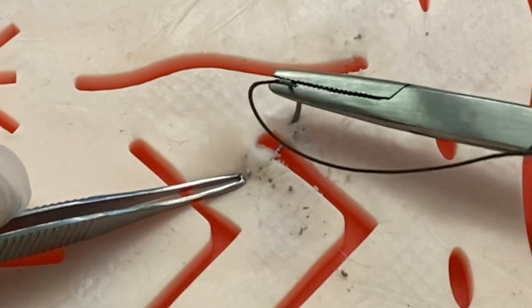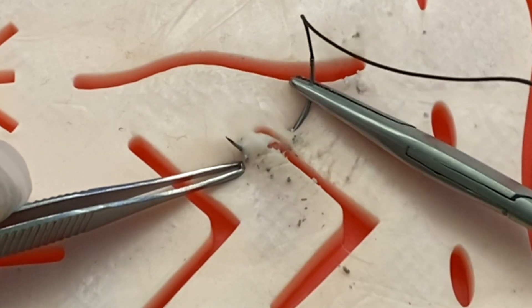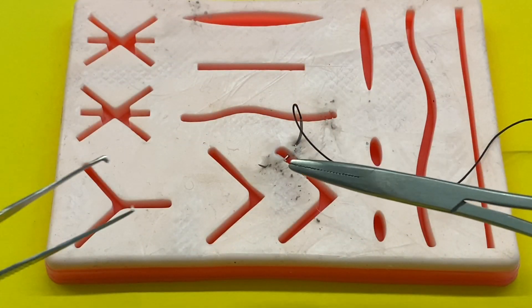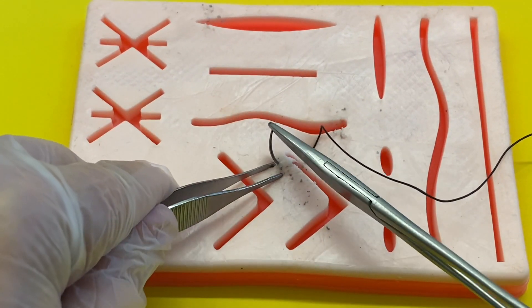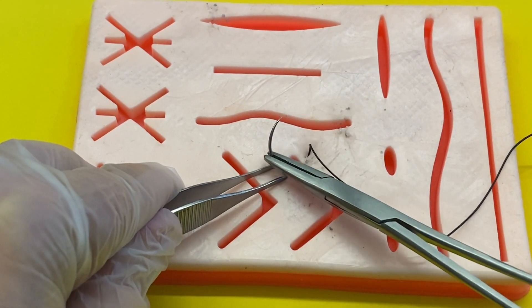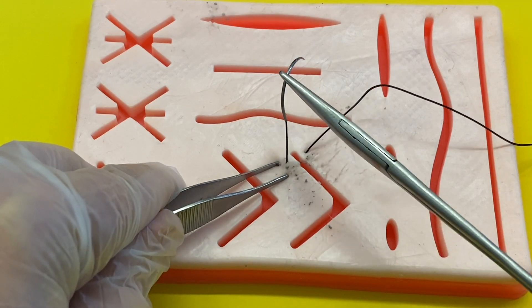Now you may have to try a couple times to make sure that the needle comes through close enough, as you can see here, and then you're going to use your needle holder to pull the rest of the needle through. Use the forceps to hold the skin down and pull.